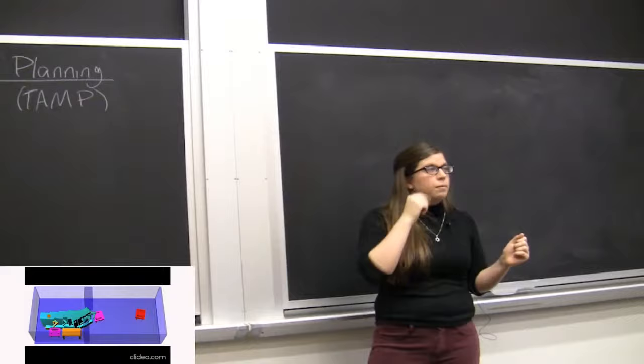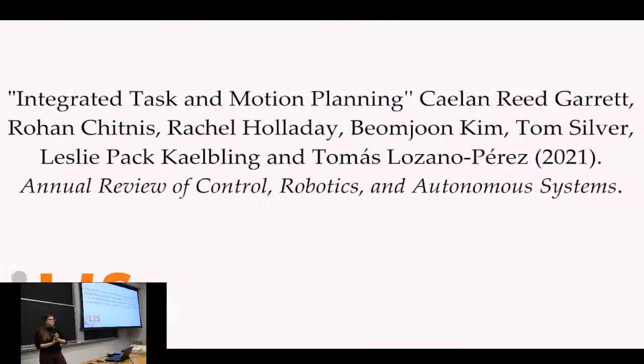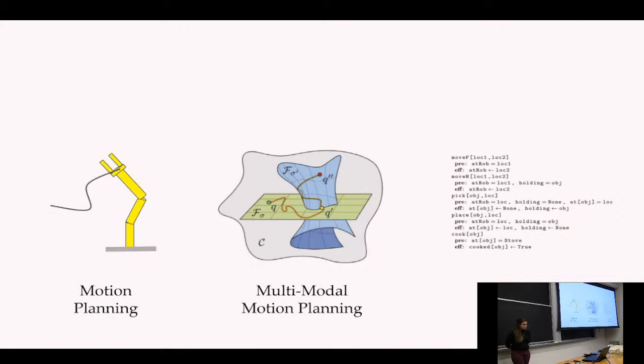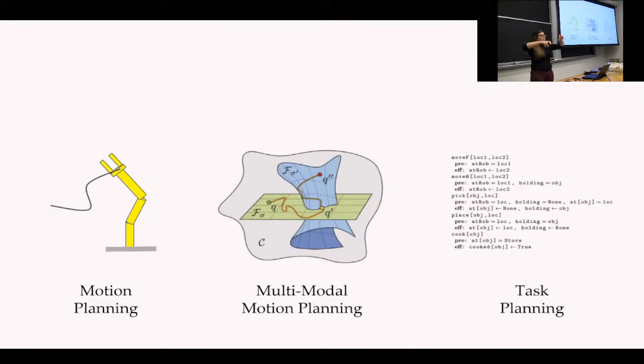A lot of what we're going to be talking about today has basis in the survey paper our lab wrote last year. If you want to look into things further or get deep insight into how this lecture was structured, I'd very highly encourage you to look at our survey paper. Task and motion planning builds off of three key areas: motion planning, task planning, and multimodal motion planning. We'll go through motion planning and task planning quickly since you're experienced in those, and spend a bit more time on multimodal motion planning.